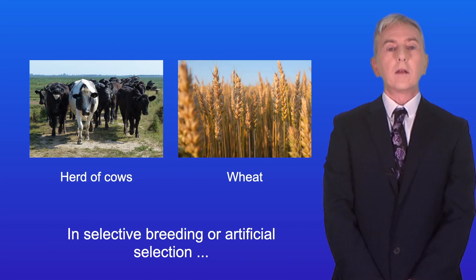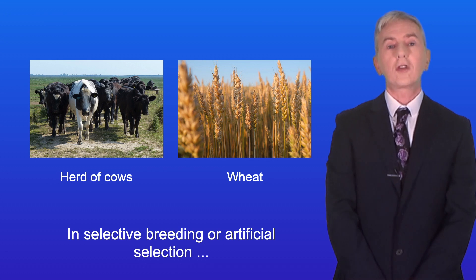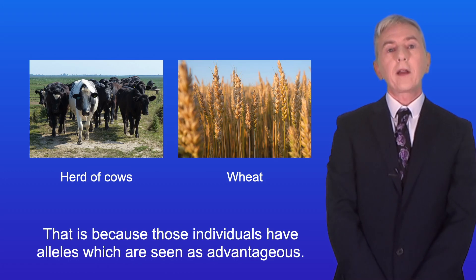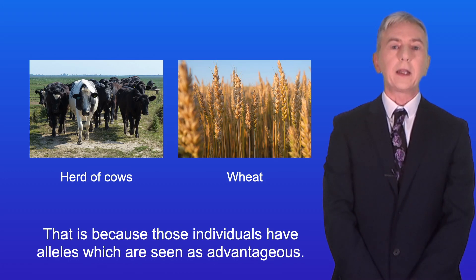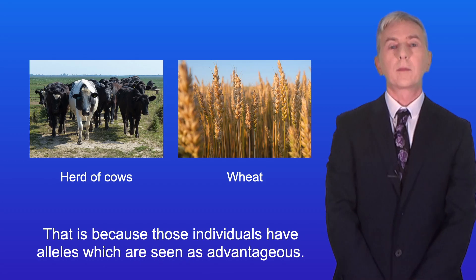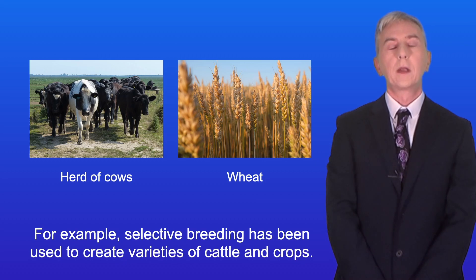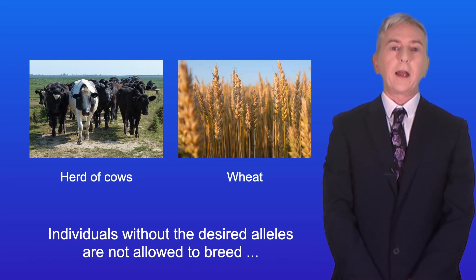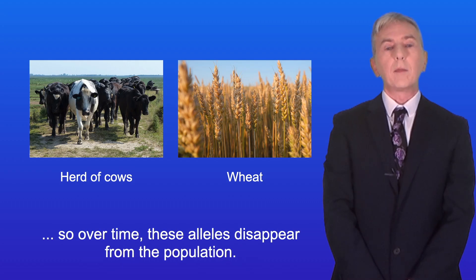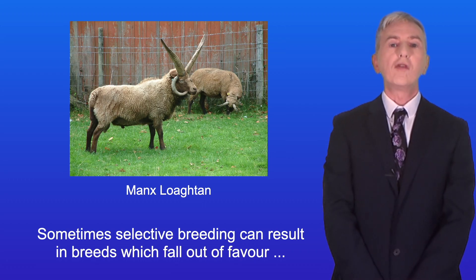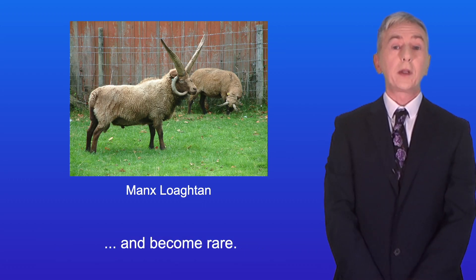In selective breeding, or artificial selection, humans select individuals in a population for breeding because those individuals have alleles which are seen as advantageous. For example, selective breeding has been used to create varieties of cattle and crops. Individuals without the desired alleles are not allowed to breed, so over time these alleles disappear from the population.